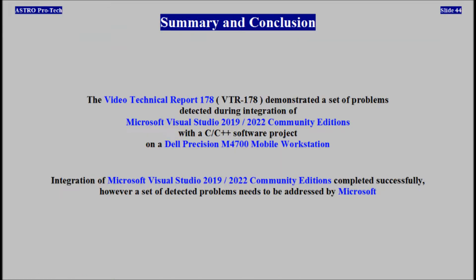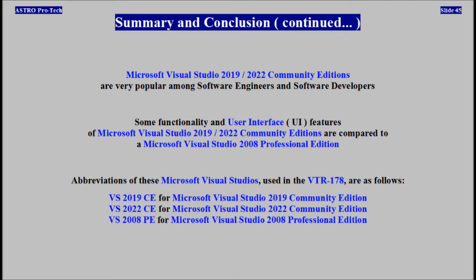Summary and Conclusion. The Video Technical Report 178 demonstrated a set of problems detected during integration of Microsoft Visual Studio 2019 and 2022 Community Editions with a software project on a Dell Precision Mobile Workstation. Integration completed successfully. However, a set of detected problems needs to be addressed by Microsoft software developers. Some functionality and user interface features are compared to Microsoft Visual Studio 2008 Professional Edition. Abbreviations used in VTR 178 are as follows.